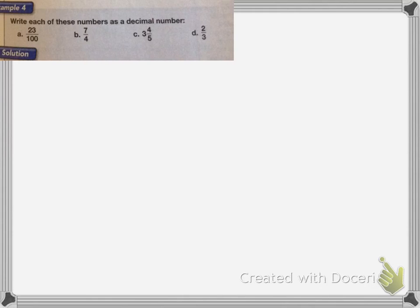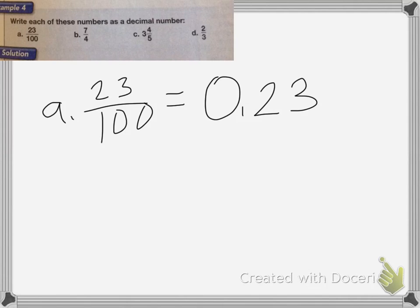Now it wants me to write each of these as a decimal number. For A, since 23 over 100, it's already over a hundredth, that means I can just put it in the hundredths place. So this is going to equal 0.23, because that 3 is in the hundredths place.